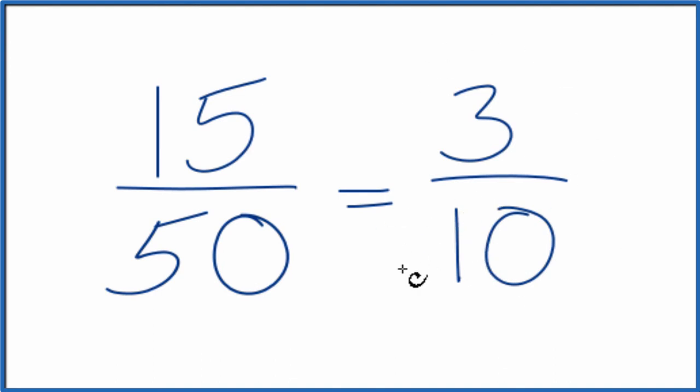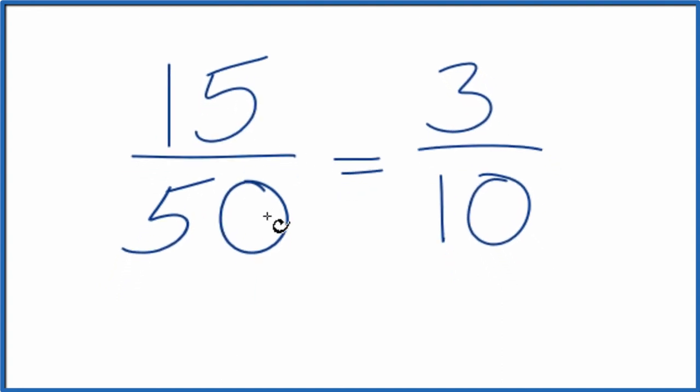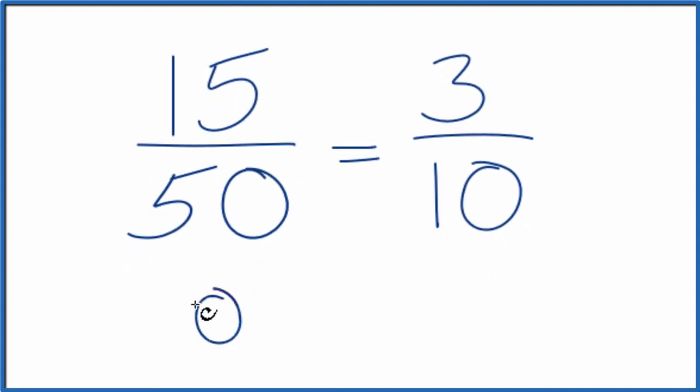So this is the simplest form. We can't reduce this any further. If you divided 15 by 50, you would get 0.3. If you divided 3 by 10, you would also get 0.3 because they're equivalent fractions.